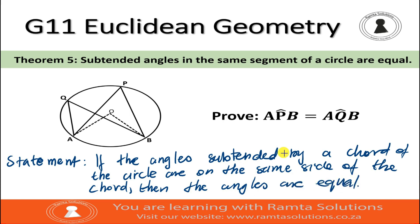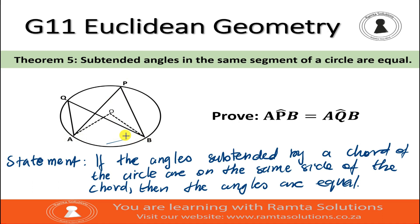Consider arc AB — or diameter AB — which subtends one angle at the circumference, which is angle P. According to this theorem, subtended angles in the same segment of the circle are equal. So if we look at diameter AB, this part is a segment, and the top part is also a segment. The part we are cutting out will be our segment.